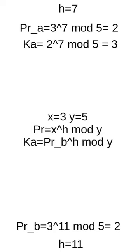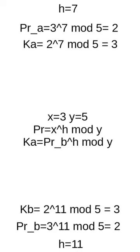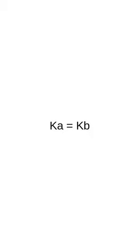And for person B, that is 2 on the power of 11 modulo 5, once again 3. At the end, keys from both sides must be equal to one another.